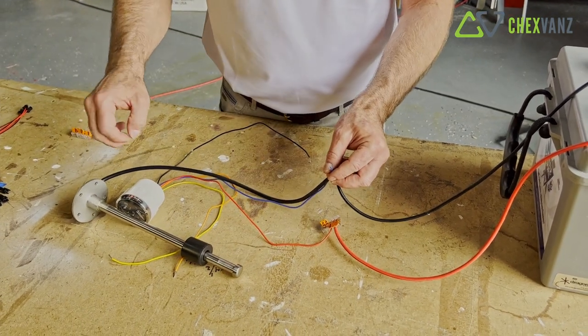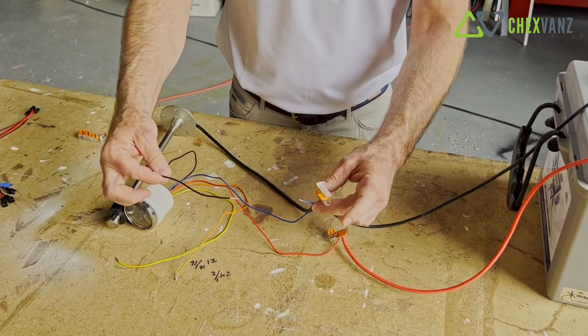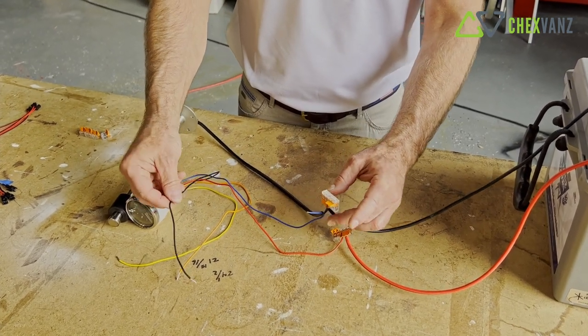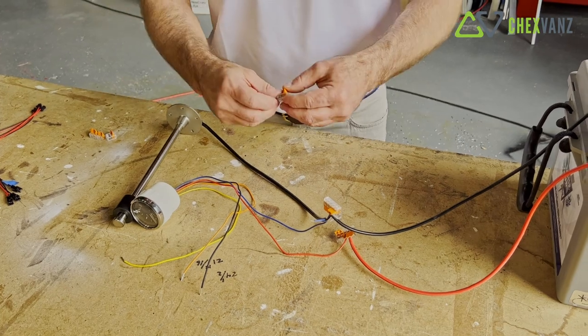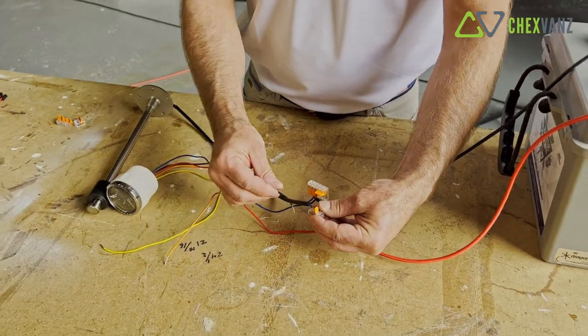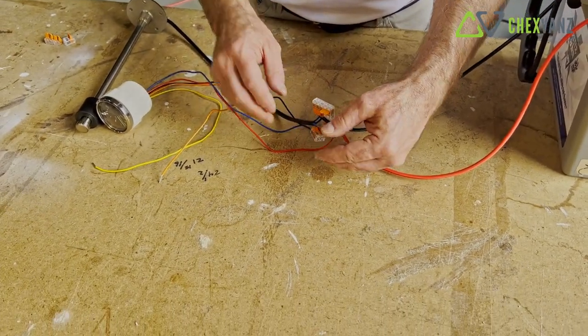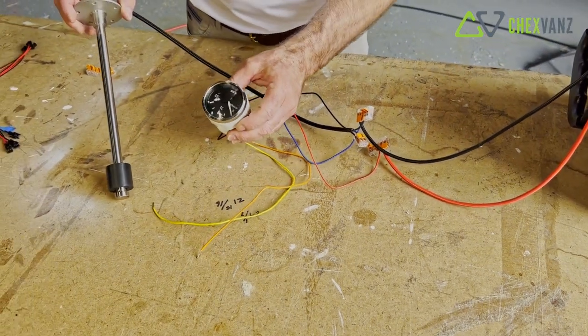Now we need to connect our gauge and our sensor together on the back end. This is what my drawing alluded to. So we're going to take another clip, clip this on the blue, we'll add this on to the black from the gauge. And now let's test this out just by itself.